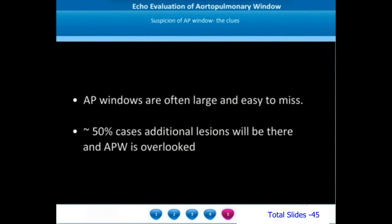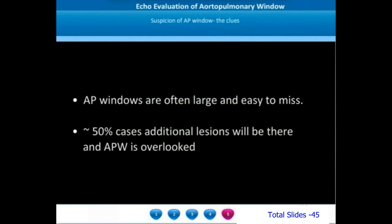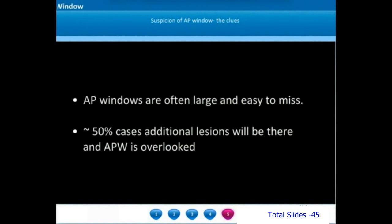Aortopulmonary windows are often very large and do not produce a lot of turbulence between the aorta and pulmonary artery. The pressures in the aorta and pulmonary artery in most large AP windows are similar, and hence they tend to get missed on color Doppler examination. Since around 50% of patients with aortopulmonary window may have additional lesions like large ventricular septal defects, aortopulmonary windows are often overlooked.